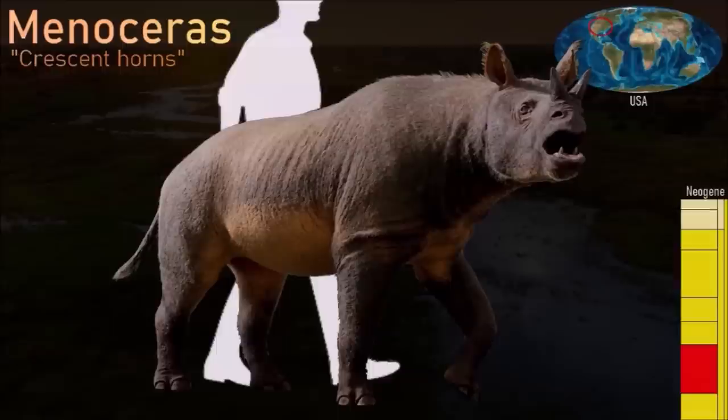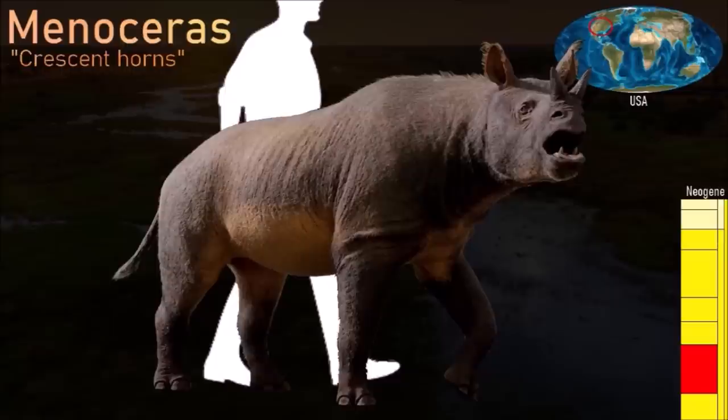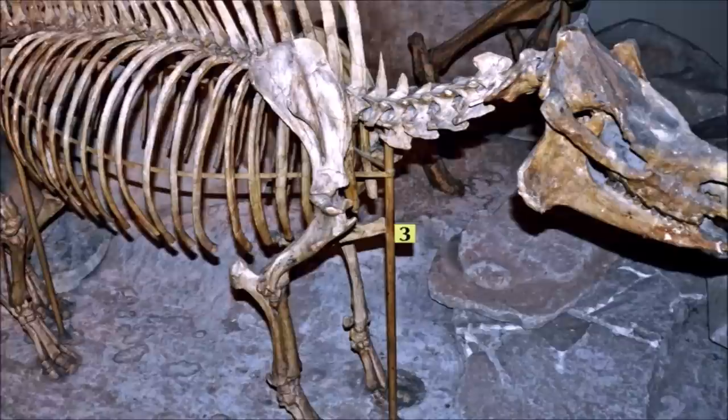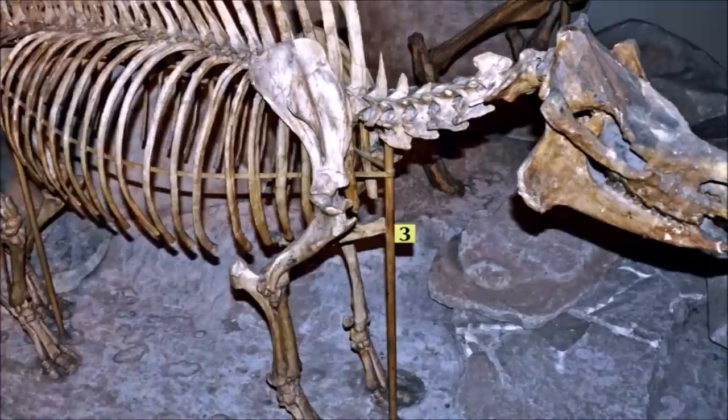Monoceros was a small rhinoceros found in early Miocene deposits of western North America, especially Nebraska and Wyoming. It was a true rhinoceros but more slender in build than modern members of the group. It was also smaller, only reaching the size of a large pig. Males had two bony horns positioned side by side on the tip of the nose, but the females were hornless.